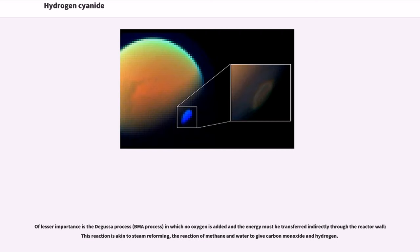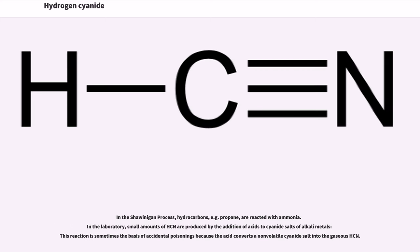Of lesser importance is the Degussa process, in which no oxygen is added and the energy must be transferred indirectly through the reactor. While this reaction is akin to steam reforming, the reaction of methane and water to give carbon monoxide and hydrogen. In the Shawinigan process, hydrocarbons, for example propane, are reacted with ammonia.